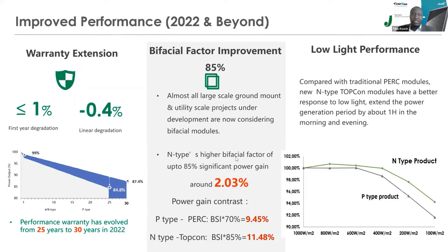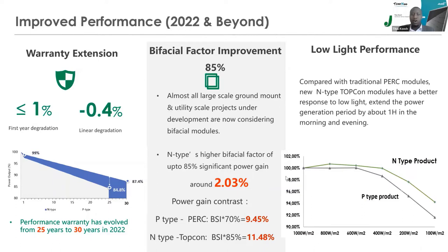With new module technologies, there is also improved performance at low-light environments. Better performance at low irradiance means generation can start earlier in the morning and extend later in the afternoon. Due to lower shunt resistance losses in N-type TopCon modules, performance is better at irradiance below 600 W/m² compared to normal mono PERC modules. Cumulatively, this results in approximately one additional hour of operation per day, leading to overall improved energy generation.